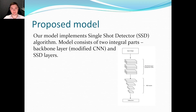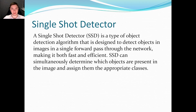Our proposed model implements a single-shot detector algorithm. The model consists of two integral parts: a backbone layer — our modified CNN — and SSD layers. A single-shot detector is a type of object detection algorithm designed to detect objects in images in a single forward pass through the network, making it fast and efficient. SSD can simultaneously determine which objects are present in the image and assign them the appropriate classes.